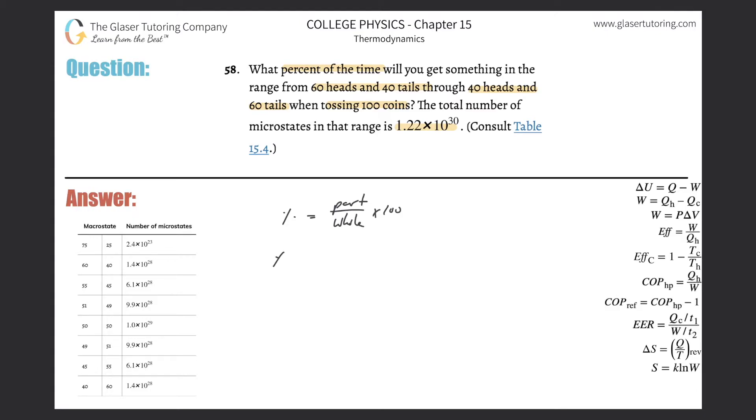In this case, we want to find the number of outcomes that range from heads being 60 all the way to tails being 40, and then heads from 40 all the way through tails being 60.